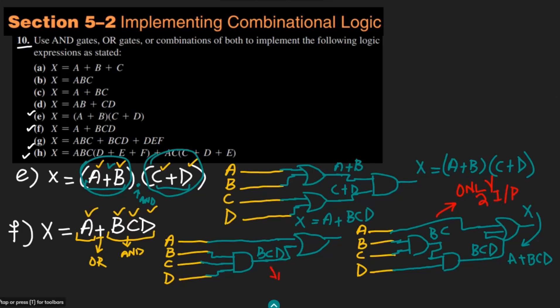The two-input gate approach is more practical because most gates we see in practice are of two inputs. Today we have solved questions E and F, implementing expressions using AND and OR gate combinations. In our next video we will talk about parts G and H. I think that is enough for today and I will see you in the upcoming video, thank you.